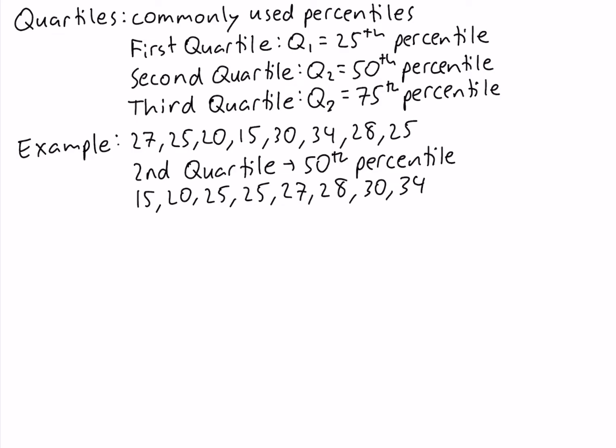Then compute the index. The formula for the index is p over 100 times n. The p for the 50th percentile is 50, and n is the number of values in the data, which is 8. So 50 over 100 times 8 equals 4.